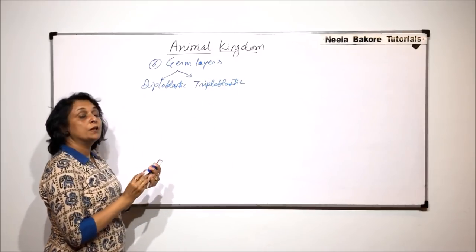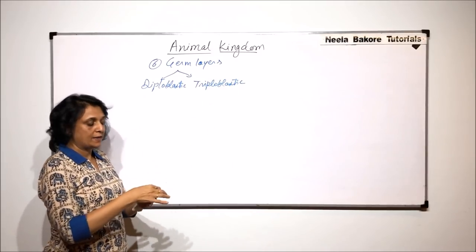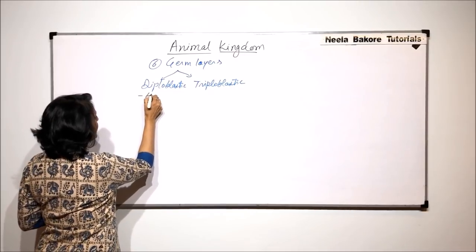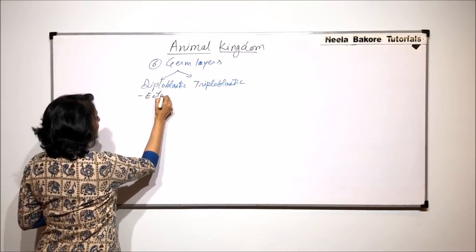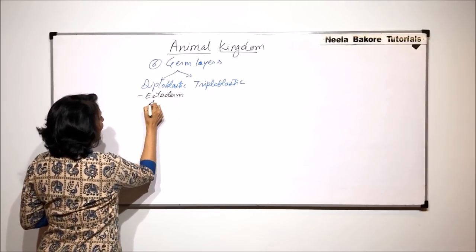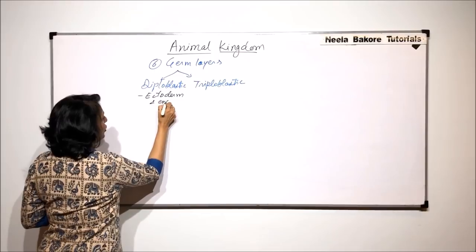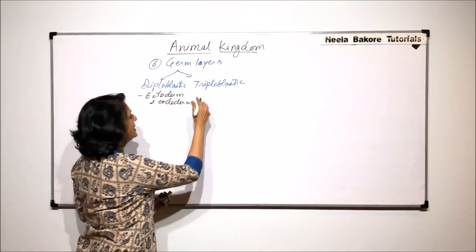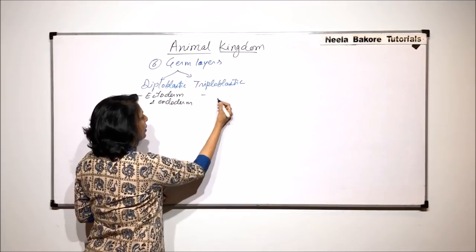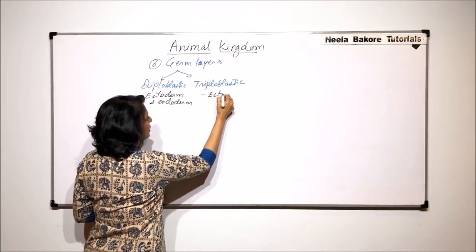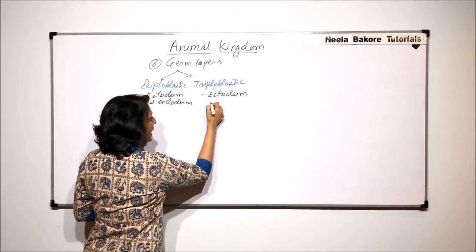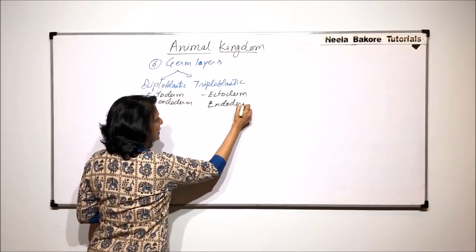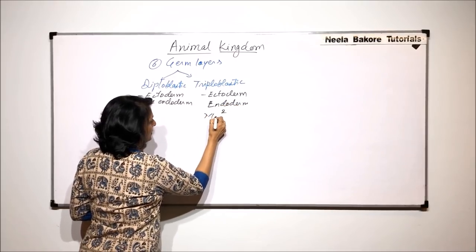When we talk of diploblastic animals, their body is formed by two germ layers: ectoderm and endoderm. Whereas in the case of triploblastic animals, the body develops from ectoderm, endoderm, and mesoderm.